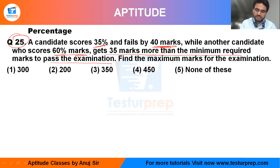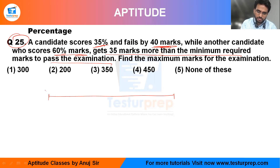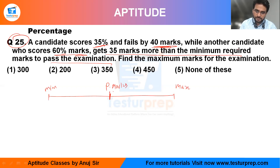Let me take a number line. This is your minimum marks, this is your maximum marks, and there is a passing marks — let's call it P. Now, one candidate gets 35 percent and fails by 40 marks.